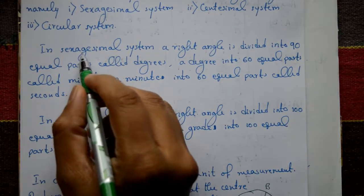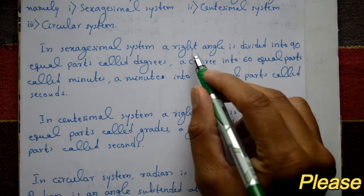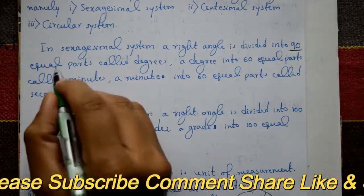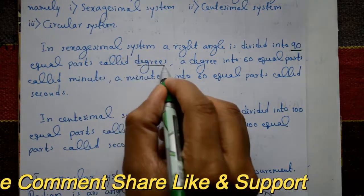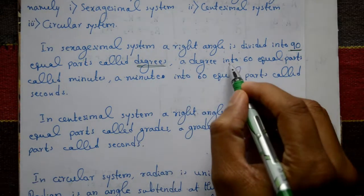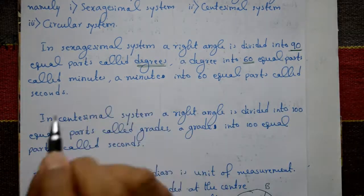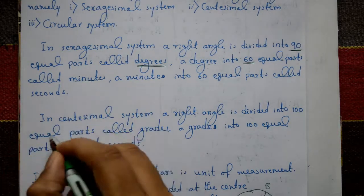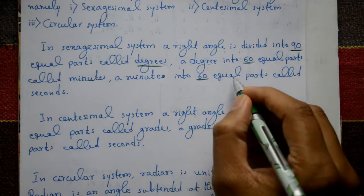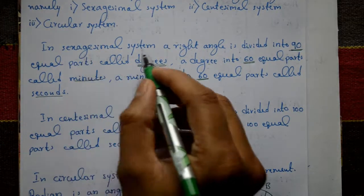In sexasimal system, a right angle means 90 degrees. A right angle is divided into 90 equal parts called degrees. A degree is divided into 60 equal parts called minutes. A minute is divided into 60 equal parts called seconds.